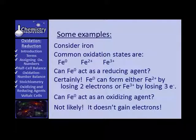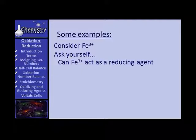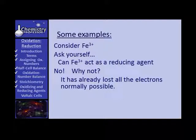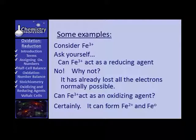Consider the ferric ion and ask yourself — can the ferric ion act as a reducing agent? Can the ferric ion lose some more electrons? The answer is no, because it's already lost all the electrons normally possible. Can the ferric ion act as an oxidizing agent? Can it gain electrons? Certainly — it can form the ferrous ion or metallic iron, either one.